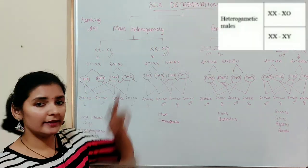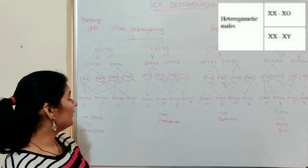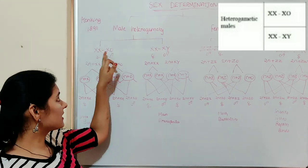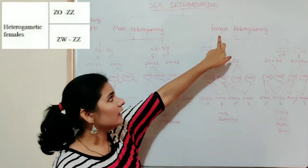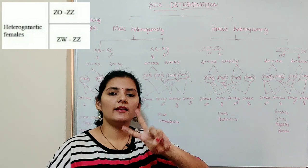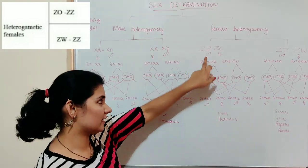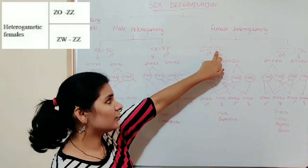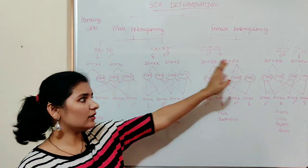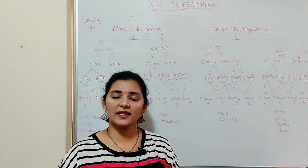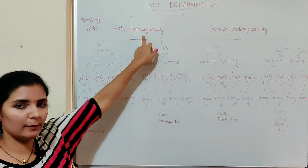Under male heterogamety, there are two types of sex determining mechanisms: XX/X0 type and XX/XY type. Similarly, under female heterogamety, there are two types: ZZ/Z0 type and ZZ/ZW type. I will discuss all four types of sex determination one by one. First, let me talk about male heterogamety — where the male individual produces different types of gametes in terms of sex chromosome.